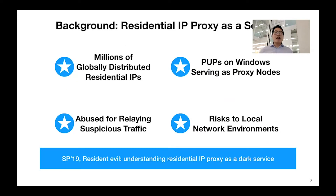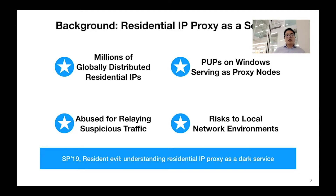In our previous work, we carried out a large-scale measurement to understand this ecosystem, and our measurement revealed a set of interesting findings. Especially, we observed millions of residential proxy nodes that are globally distributed. The recruitment process was found to be suspicious, and we identified a set of potentially unwanted programs on Windows platforms that served as proxy nodes. This ecosystem was also found to be abused by proxy customers to relay suspicious traffic, such as advertisement fraud, and we identified risks to local network environments. For more details, you can refer to our paper published at Oakland '19.